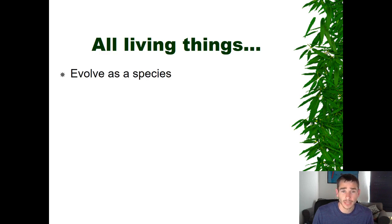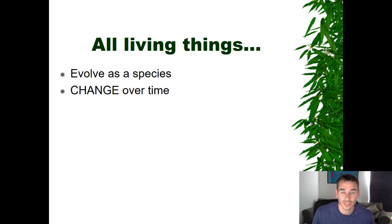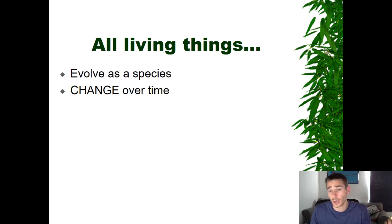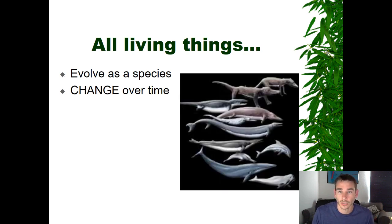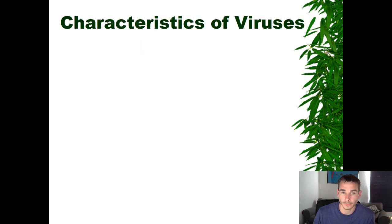The final characteristic is that living things must be able to evolve as a species. Evolution is something we'll talk about a lot later in the year, but for now, evolution means changing over time — and by time I mean a very long time: thousands and thousands of years. As years go by, species adapt and change to their environment, and could look quite different after many many years have passed.